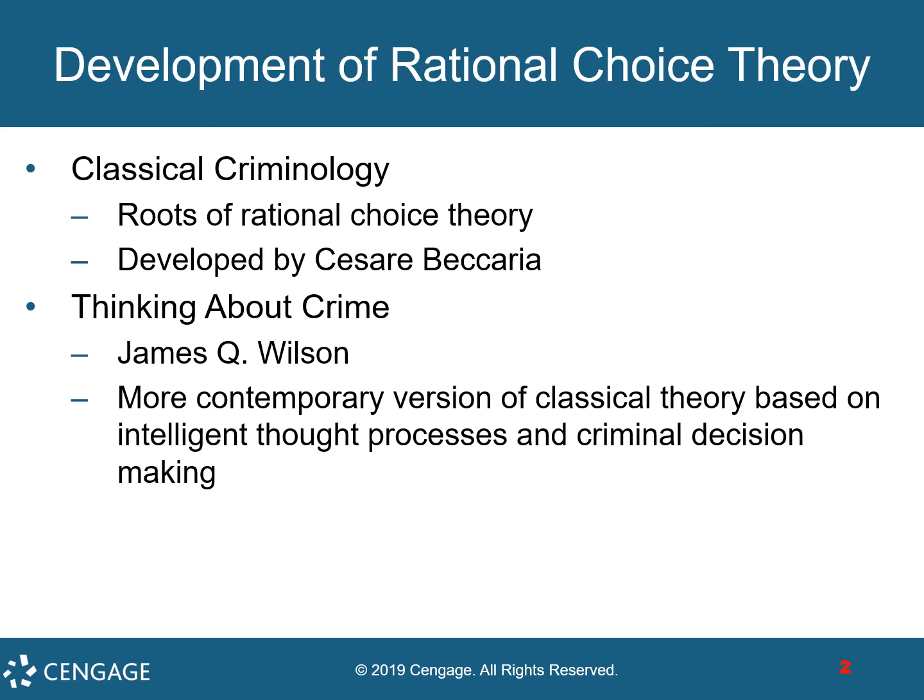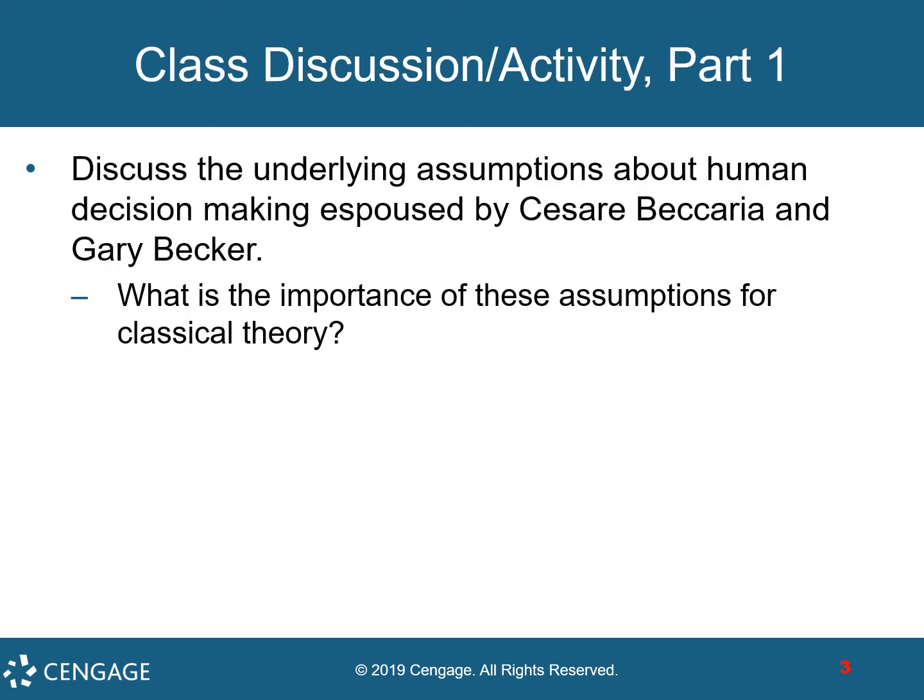When thinking about crime, James Q. Wilson produced a more contemporary version of classical theory based on intelligent thought processes and criminal decision-making. Becker argued that criminals engage in cost-benefit analysis. Discuss the underlying assumptions about human decision-making espoused by Cesare Beccaria and Gary Becker, and consider the importance of these assumptions for the classical theory of crime.